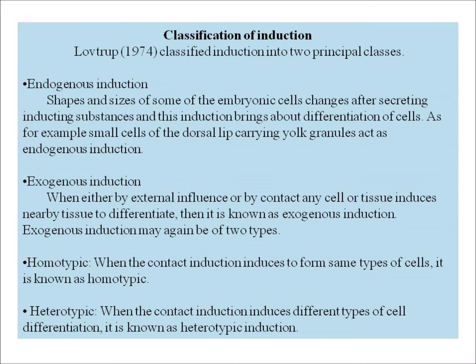Classification of induction: Lootrop in 1974 classified induction into two principal classes — endogenous induction and exogenous induction. Endogenous induction means the shapes and sizes of some embryonic cells change after secreting inducing substances, and this induction brings about differentiation of cells. For example, small cells of the dorsal lip carrying yolk granules act as endogenous induction.